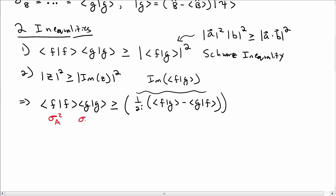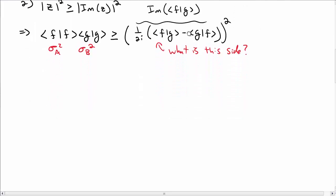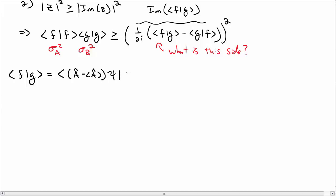This gives us our starting point: the left-hand side is sigma-A squared times sigma-B squared, and we need to determine the right-hand side in terms of our operators A and B. Let's compute the inner product ⟨F|G⟩. Recall F was the operator A minus its expectation value acting on psi.